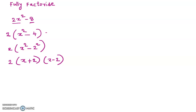The partial factorization 2(x² minus 4) is also correct, and we can stop there. But if they ask specifically to fully factorize the equation, then you should proceed to the step 2(x+2)(x-2). If they ask to fully factorize, we have to go up to this step.